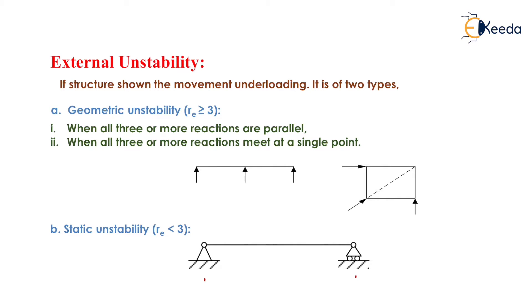Now we will see external instability. If a structure shows movement under loading, then the structure is said to be externally unstable. To summarize: if a mechanism is formed, the structure is internally unstable; if the structure shows movement under loading, the structure is externally unstable.